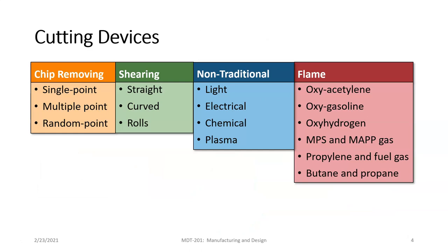Looking at each one of these basic elements, cutting devices can be divided into four different categories. We have chip removing devices — the cutting device is going to remove a chip from the material, a series of chips removed to make the finished part. A shearing device — think of scissors — where we're basically making a slice through the object and cutting it into two or more pieces. Non-traditional cutting devices include using laser light, electrical discharge, chemical, and plasma.